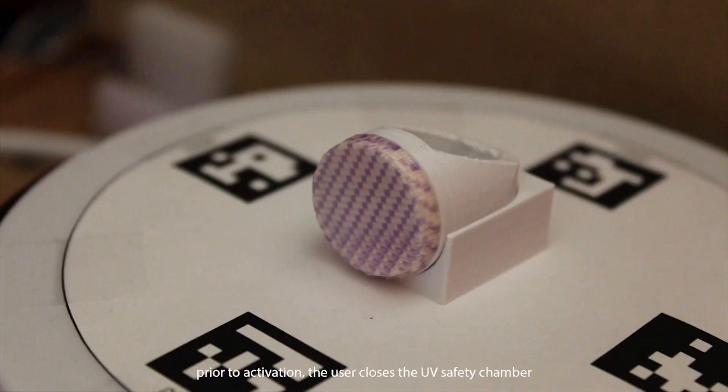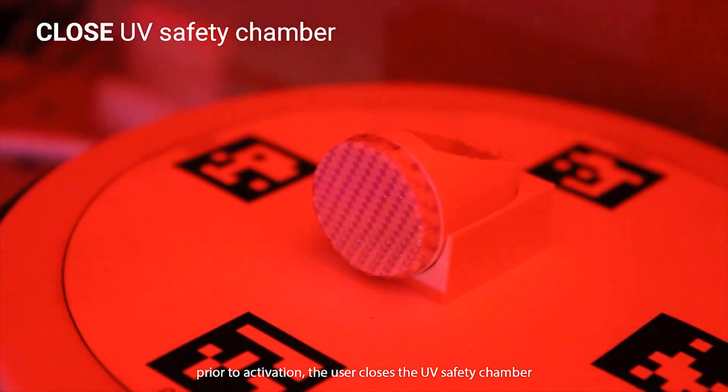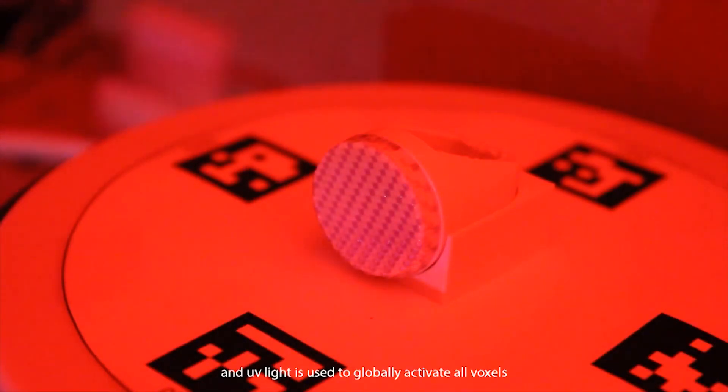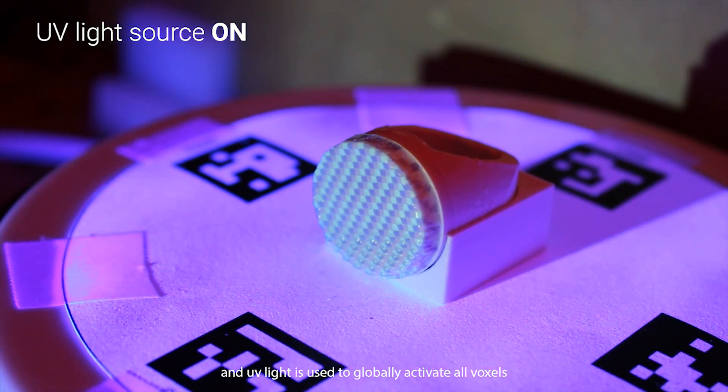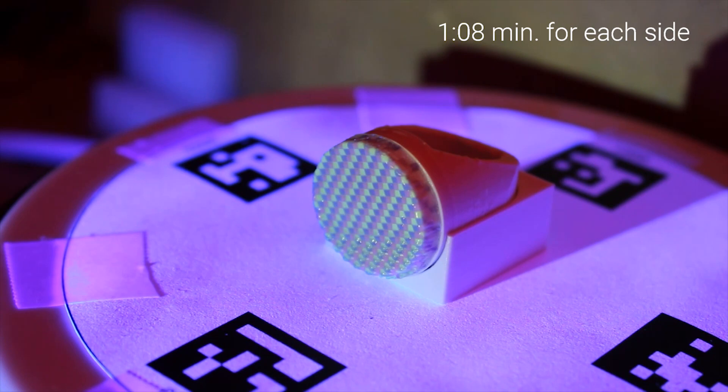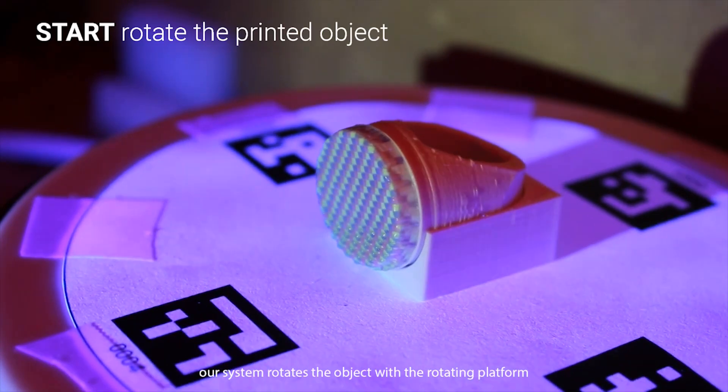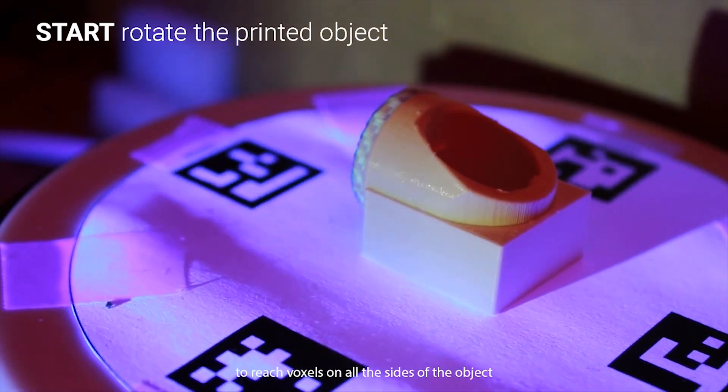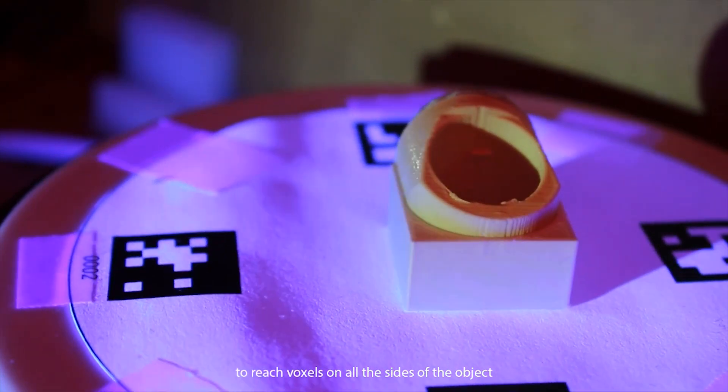Prior to activation, the user closes the UV safety chamber and UV light is used to globally activate all voxels. Our system rotates the object with the rotating platform to reach voxels on all sides of the object.